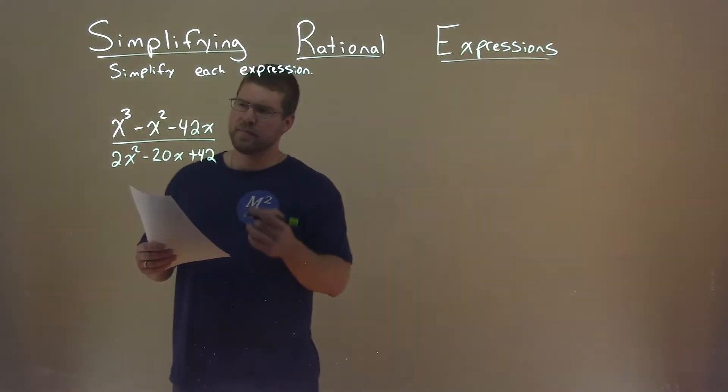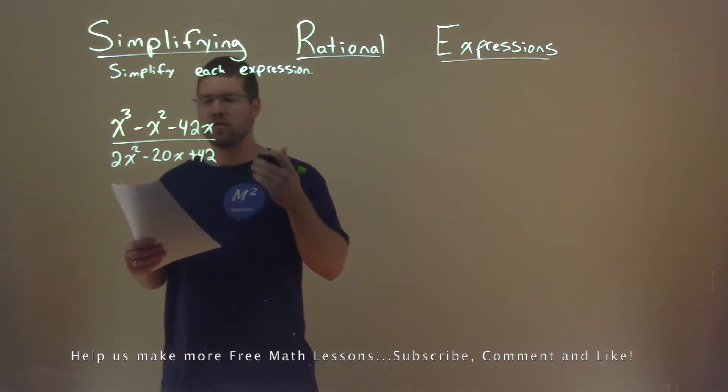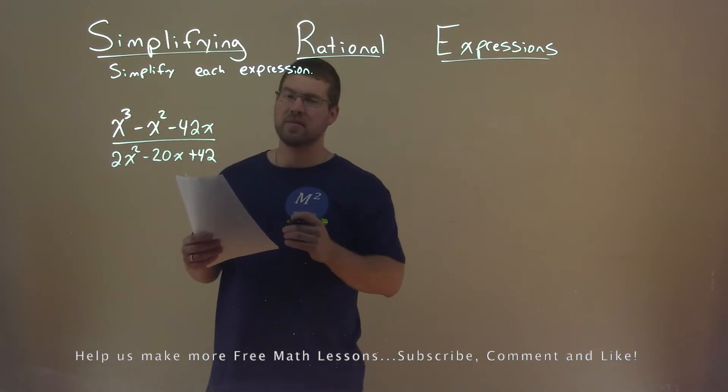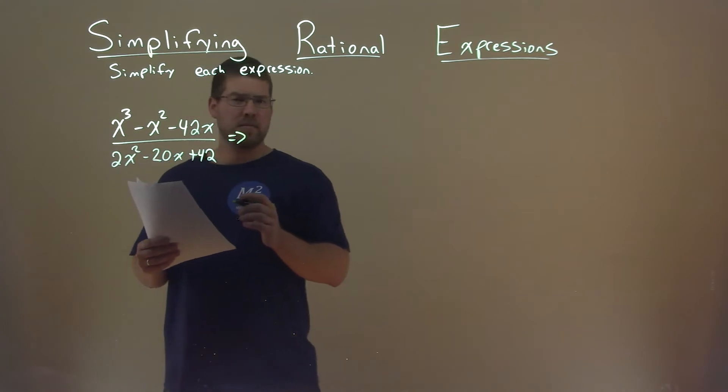We're given this problem right here: x to the third power minus x squared minus 42x over 2x squared minus 20x plus 42, and we need to simplify this. Well, how do we do that? Let's go break some things down.